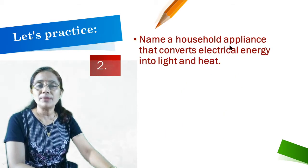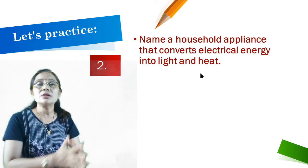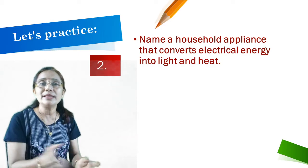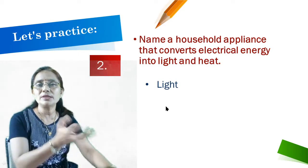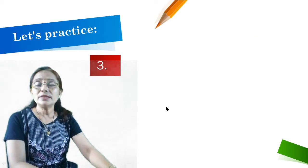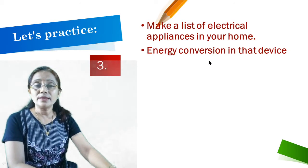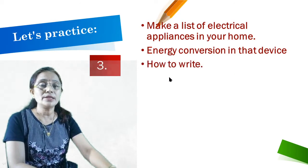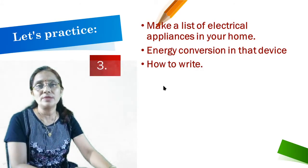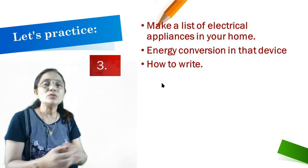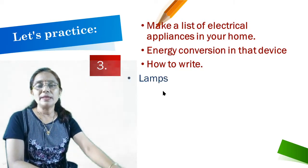Second question: name the household appliances that convert electrical energy into light and heat. A simple example is a light bulb. Third question: make a list of electrical appliances in your home and write the energy conversion in each device. For example, a lamp uses electrical energy and produces light.